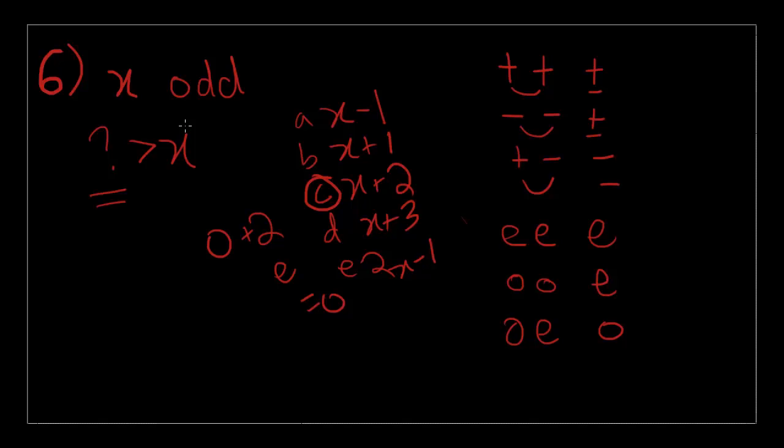And that is the next odd integer greater than x, and it is the consecutive one as well, since we're only adding two. That's the answer to number 6, and number 7 has a graph on it. Let's draw that.